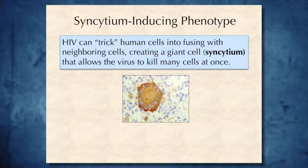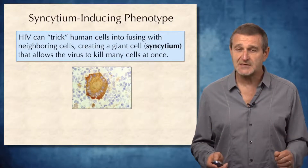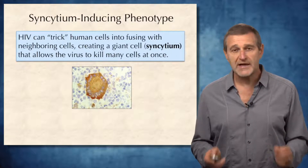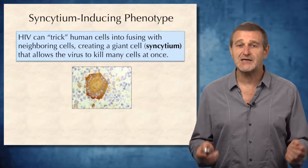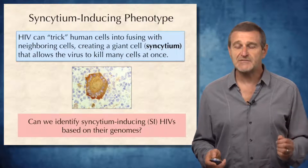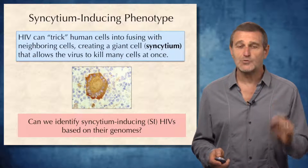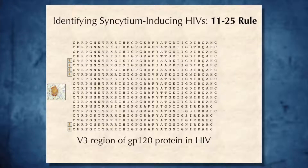Today we will talk about one specific HIV phenotype called the syncytium-inducing phenotype. HIV has the ability to trick human cells to fuse together to form one giant cell. Why would HIV do such a strange thing? Because it's easier to kill all these cells when they are fused into a single cell. The question we will address today is: given an HIV sequence, can we figure out whether it has a syncytium-inducing phenotype or not?